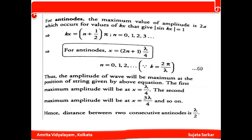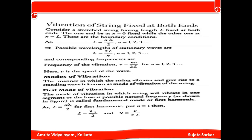For vibration of a string fixed at both ends: let one end be at x = 0 and the other at x = L. The possible wavelengths of stationary waves are λ = 2L/n, where n = 1, 2, 3, ... The corresponding frequencies of vibration are given by ν = nv/2L, where n = 1, 2, 3, ... and v is the wave speed.